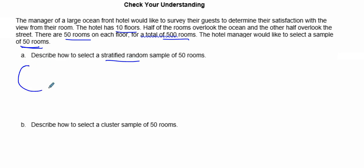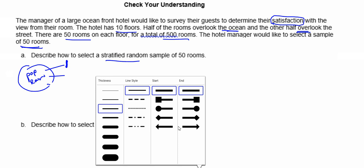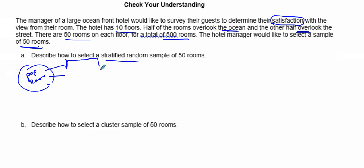For a stratified random sample, strata means we take our population — in this case, the rooms — and divide them into distinct groups that might have some impact on satisfaction. In this case, whether a room overlooks the ocean or the street is likely to affect satisfaction. So we separate the rooms into two distinct strata: the ocean side and the street side.